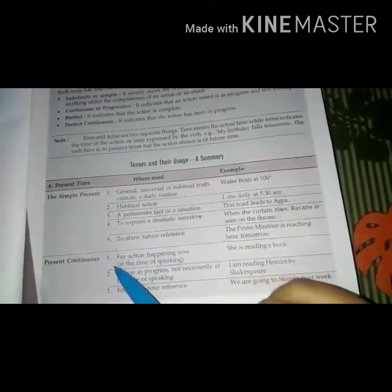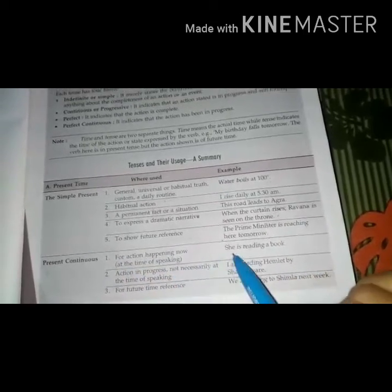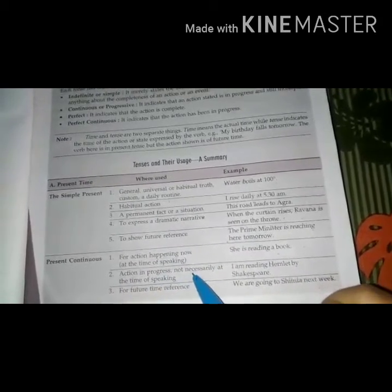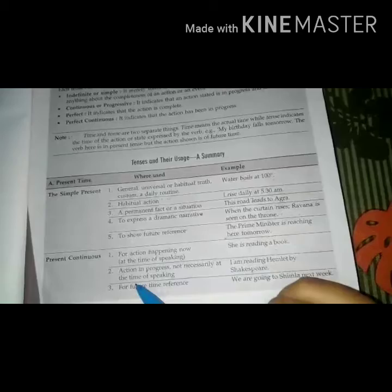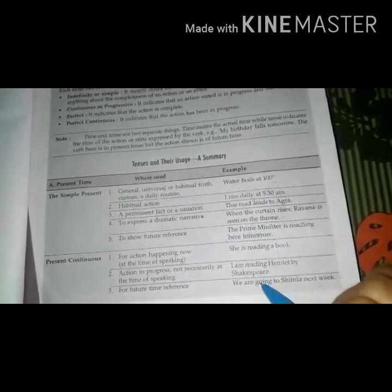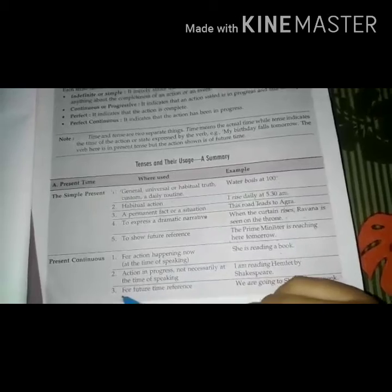Present continuous: For action happening now, at the time of speaking - She is reading a book. Action in progress, not necessarily at the time of speaking - I am reading Hamlet by Shakespeare. Number three, for future time reference: We are going to Shimla next week.